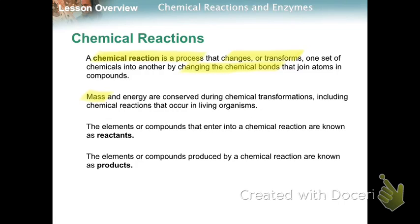Mass and energy are conserved during chemical transformation, so whatever is going into the reaction mass-wise and energy-wise will be the same coming out. The elements or compounds that enter into a chemical reaction — the ingredients — are known as the reactants. The things produced by a chemical reaction are known as products.